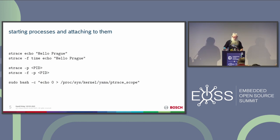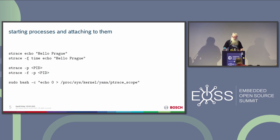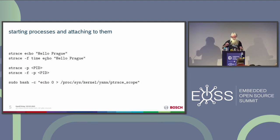Typically strace will only trace this single command or single process you specify. If that process does a fork and exec creating new child processes, they're not traced automatically - you have to say dash-f to follow all those. For the time-plus-echo example, 'time' is the command being strace'd. If I only do strace without dash-f, it will only trace 'time'. Then 'time' will exec 'echo' as a child. Without dash-f, you don't see what echo does.